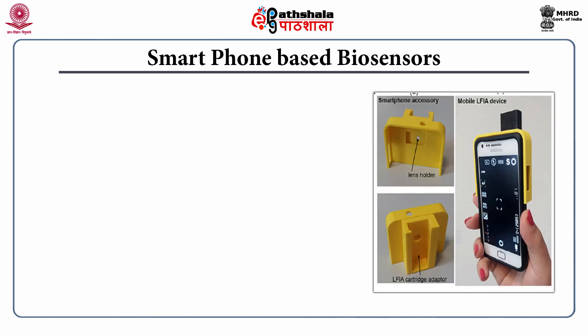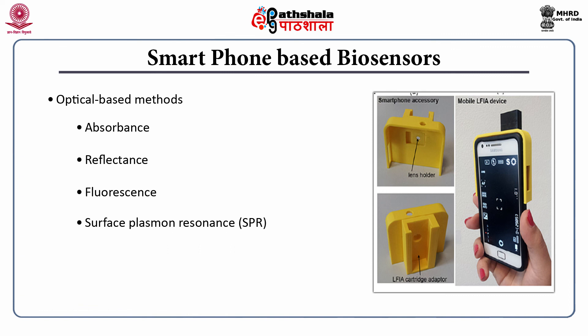Another advancement in biosensor technology is the integration of smartphones with biosensors. As smartphones are equipped with efficient cameras, they can be used as optical transducers to measure optical properties of the sample. Properties such as absorbance, reflectance, fluorescence, surface plasmon resonance, biochemiluminescence, and electrochemiluminescence can be monitored through these cameras. The only requirement is some accessories to place the sample close to the smartphone camera to capture the absorbance or other optical properties of the sample.